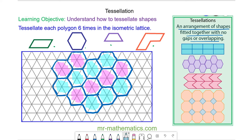If you have isometric paper do you want to try and show this purple trapezium will tessellate and this orange hexagon will also tessellate. You can pause the video and resume it when you're ready.